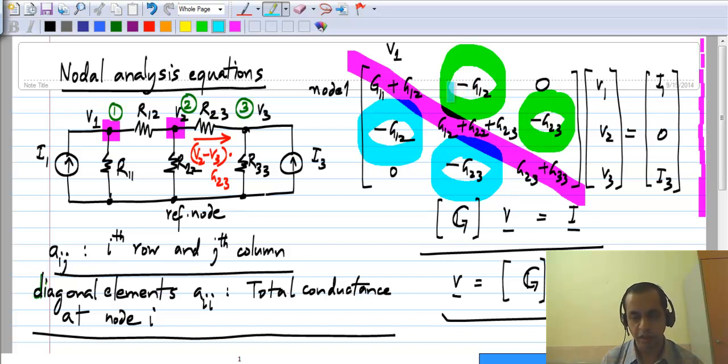Now, it is also obvious why it is symmetric, because this is element A12, which would have negative of conductance between nodes 1 and 2, and this is element A21, which would have the negative of conductance between node 2 and 1, which is exactly the same as the conductance between nodes 1 and 2. So the matrix is symmetric as well.